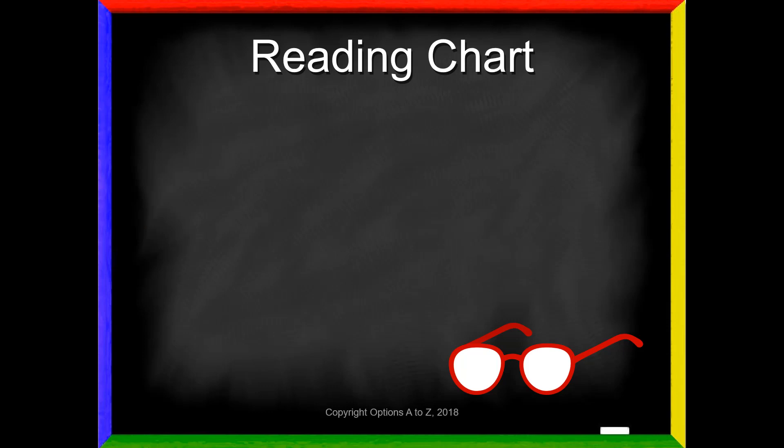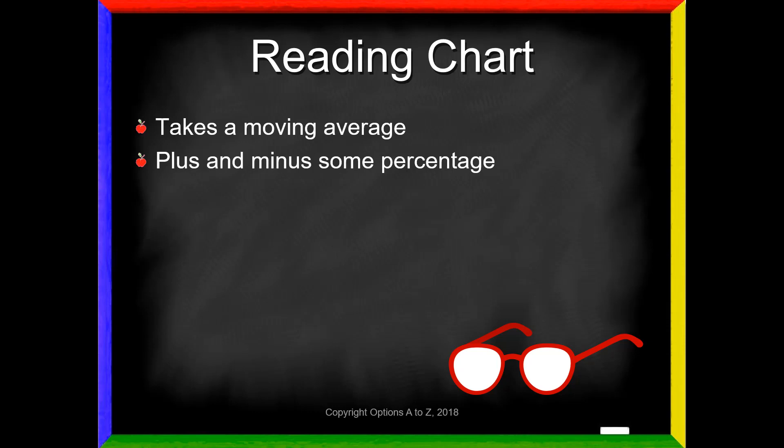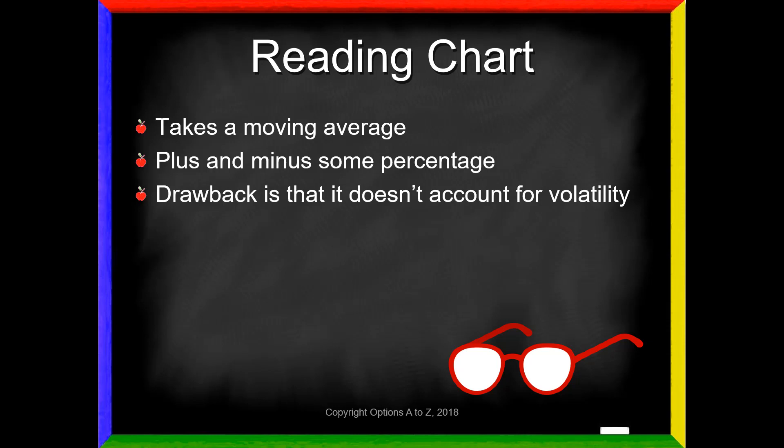So how do we read the chart? It's very simple. You're going to take a moving average — up to you which one you want to use. Shorter-term traders might use a 14-day or 20-day; longer-term traders might use a 50 or 100. Whichever moving average you select, it's going to take that number and add plus and minus some percentage, which you get to designate — say plus and minus 2.5% or 5%. The drawback is that the Moving Average Envelope doesn't account for volatility, meaning we must adjust it for each stock. However, that's also where one of its benefits lies, because it's so different from the other ones.